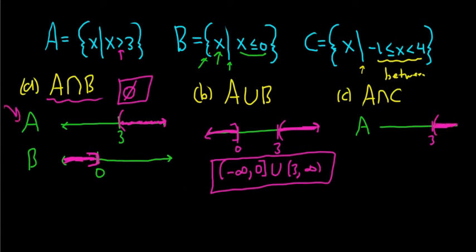All right, now let's look at the graph of C. So C is all the numbers between negative 1 and 4. So negative 1 is maybe here, and 4 is maybe here. It's a little bit bigger than 3, so I want to make sure I line these up correctly.